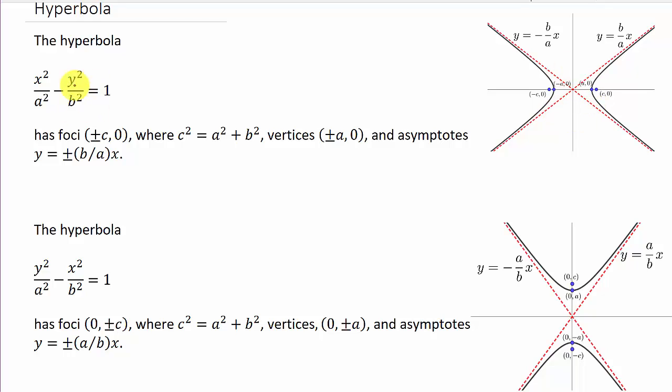So the equation for that would be we would have X minus H squared over A squared minus Y minus K squared over B squared equals 1. And then the other way that it would shift, if this was written as Y minus K squared over A squared. And I know I wrote plus up here, that should be minus. That should be X minus H squared over B squared equals 1.